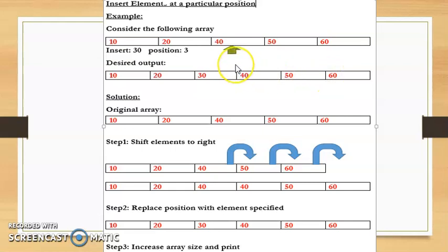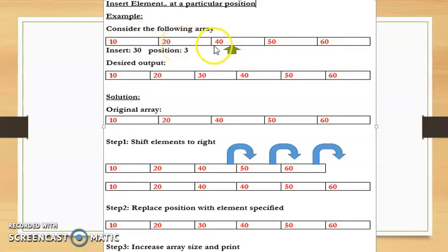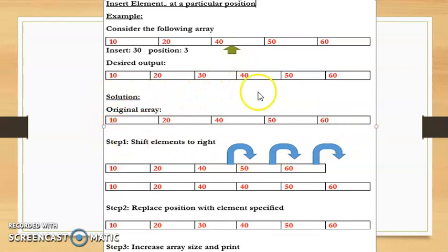One important thing: when the user says he wants to insert at position 3, it means that actually inside the array we will be inserting at the second position, because array values start from 0. So this will be the 0th, 1st, and 2nd positions. Whenever the user says position 3, it will be inserted at the 2nd index inside the array.